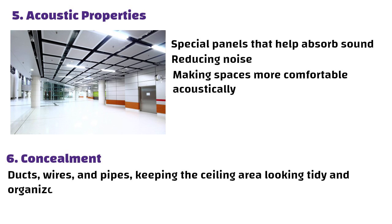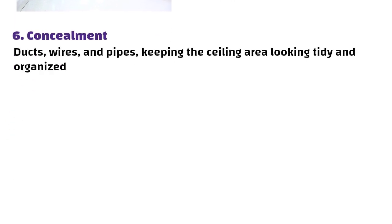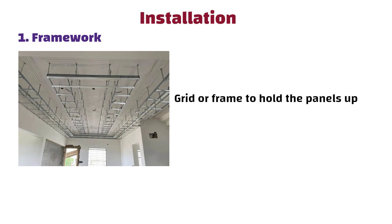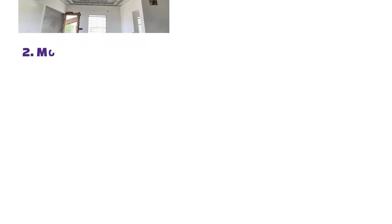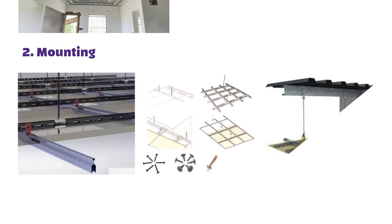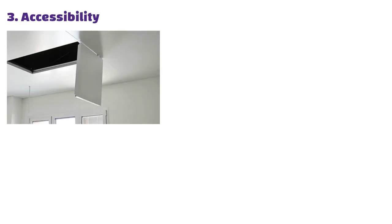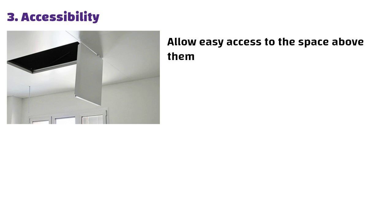Now let us understand what things we need to consider while installing metal false ceilings. First, Framework. Metal ceilings need a grid or frame to hold the panels up. This grid must be installed securely and kept level to make sure the panels fit and stay in place properly. Second, Mounting. Panels can be attached in different ways, like using clips, screws or a drop-in system. The method you choose depends on the type of panels and how you want them to look. Third, Accessibility. Metal ceilings are designed to allow easy access to the space above them, which is important for reaching things like air conditioning or electrical systems for maintenance and repairs.